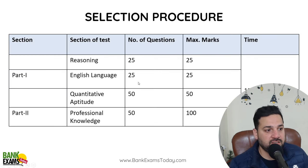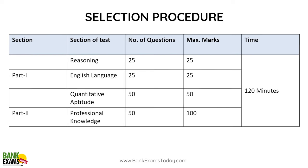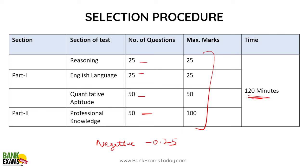There are four subjects: Reasoning Ability — 25 questions, 25 marks; English Language — 25 questions, 25 marks; Quantitative Aptitude — 50 questions, 50 marks; and Professional Knowledge — 50 questions, 100 marks. There is negative marking of 0.25 for every wrong answer. Only 120 minutes are given for all four sections, so time management would be an issue because you need to do 150 questions within 120 minutes.